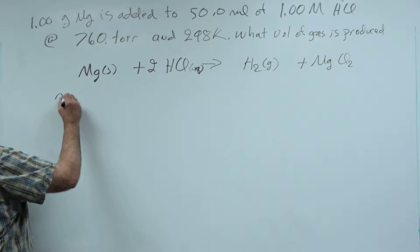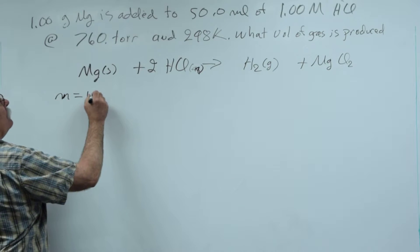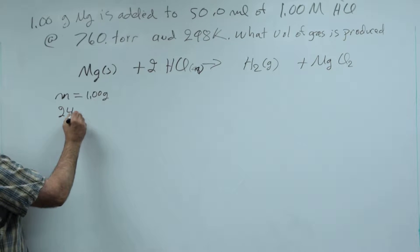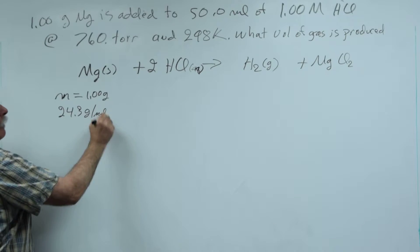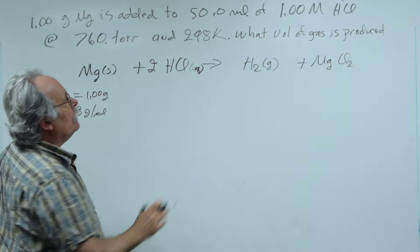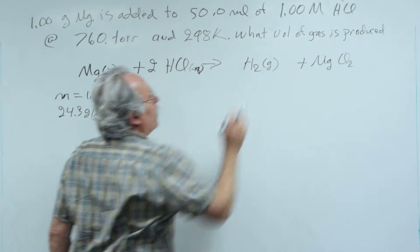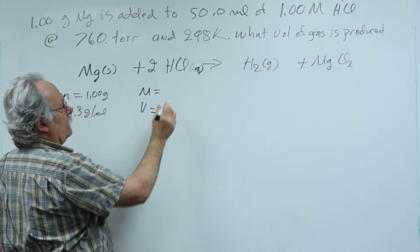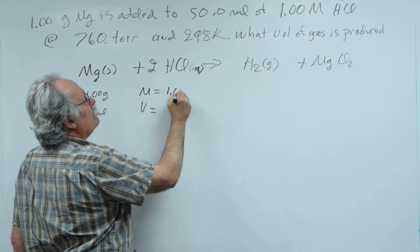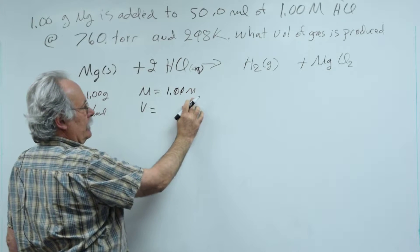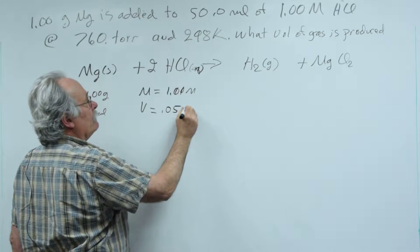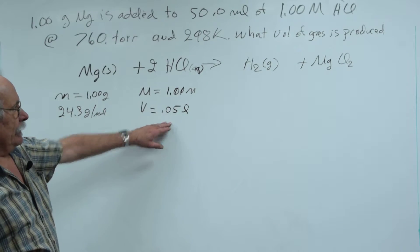So, I'm given the mass, which is equal to 1.00 grams, and I need to calculate the moles. So, I need to look up its formula weight, which I can get off the periodic table, and it's 24.3 grams per mole. Now, HCl is a solute, so I need its volume and its concentration, so I need the molarity and the volume. And the molarity is equal to 1.00 molar, moles per liter. And the volume is 50 mils is 0.05 liters. It should have three sig figs, but I'm going to keep the chalkboard clear.